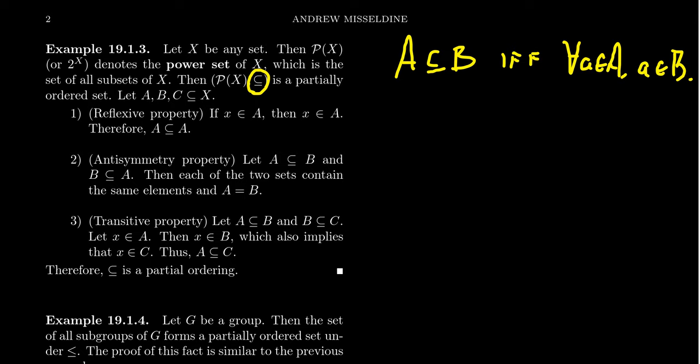What about antisymmetry? Suppose that A is a subset of B and B is a subset of A. That implies that the two sets are equal to each other. That's how we define set equality: two sets are equal exactly when A is a subset of B and B is a subset of A. And then transitivity: if A is a subset of B and B is a subset of C, we want that A is a subset of C. Take an arbitrary element of A. Because A is a subset of B, every element of A will be an element of B. Since B is a subset of C, every element of B, which includes X, is an element of C. As X was an arbitrary element of A, this shows that A is a subset of C.